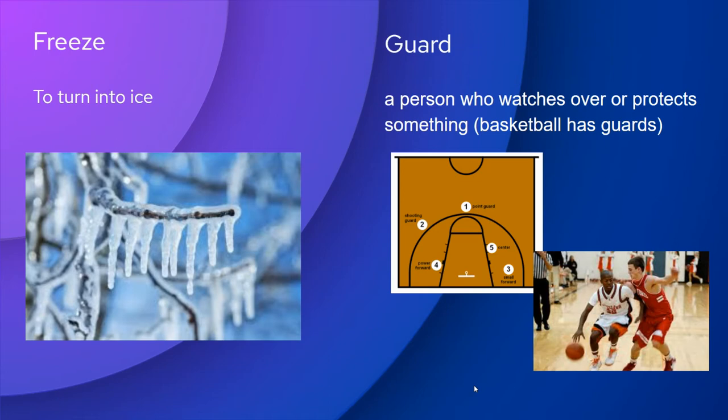A guard — in this story, a guard is not going to be somebody that defends or protects over a castle or a king and queen. It is a person who watches or protects something else, such as a basketball game. There are guards in basketball, and if you look at the little chart, you'll see where the point guard or the shooting guard is.